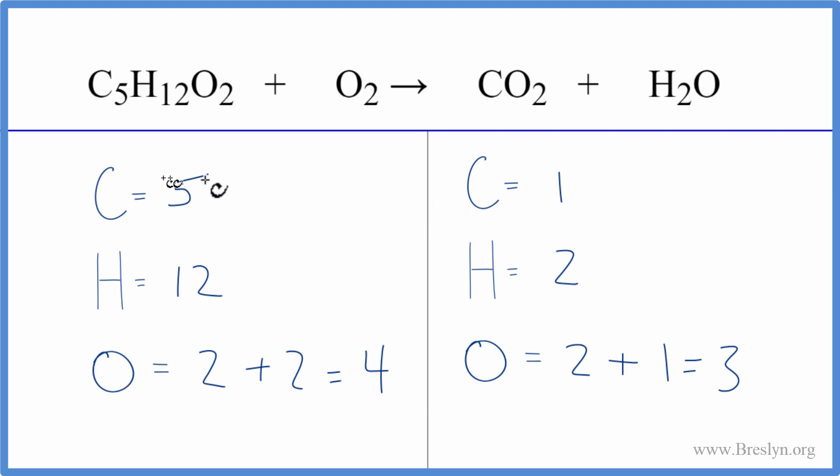Start with a carbon. We need five carbons here to balance these five. So let's put a coefficient of five in front of the CO2. One times five, that'll give us five carbons. Those are balanced,